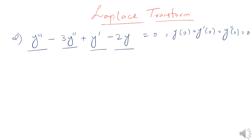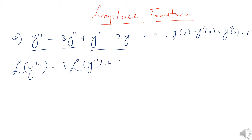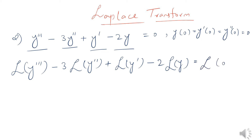So the Laplace transform of y triple prime, minus 3 times the Laplace transform of y double prime, plus the Laplace transform of y prime, minus 2 times the Laplace transform of y, is equal to the Laplace transform of 0.